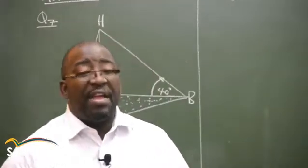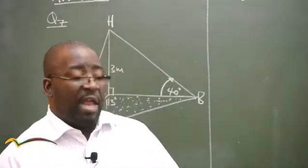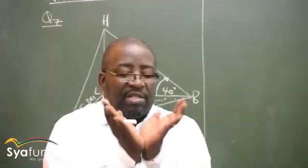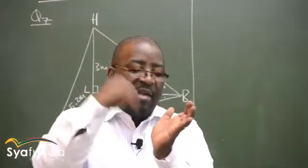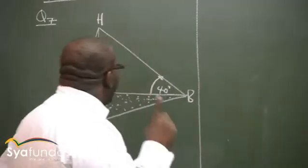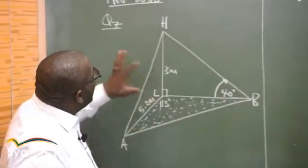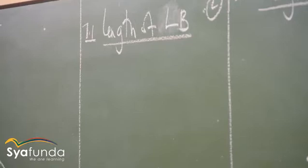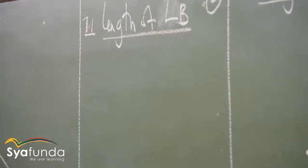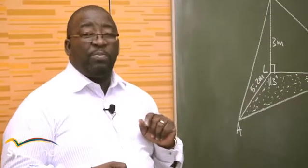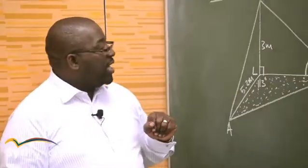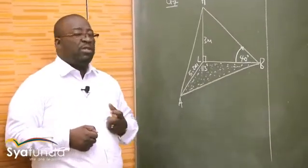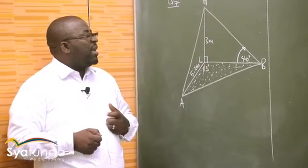You only use the area rule when you're required to find the area. You only use the cosine rule when you are given two adjacent sides and an included angle. Let's look at question number one — we are required to find the length of side LB. It is very important that you mention the triangle that we are using.